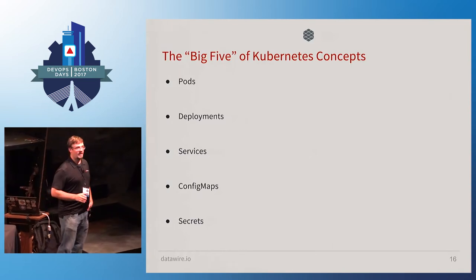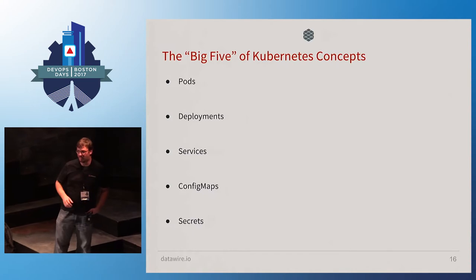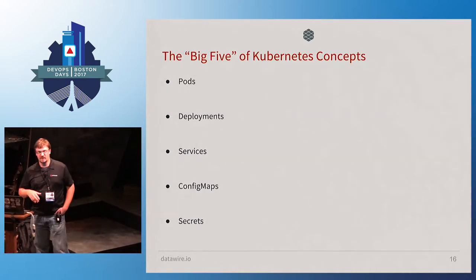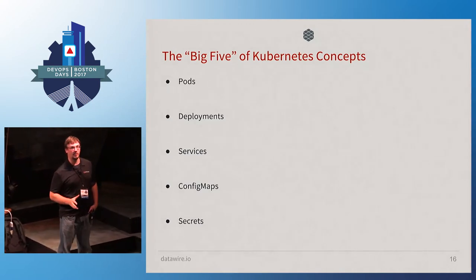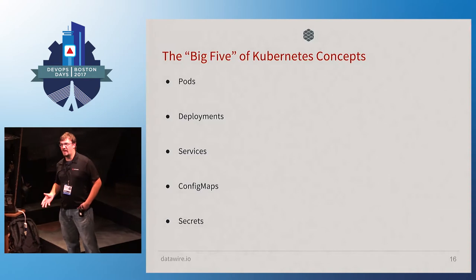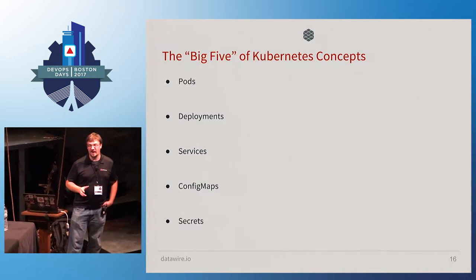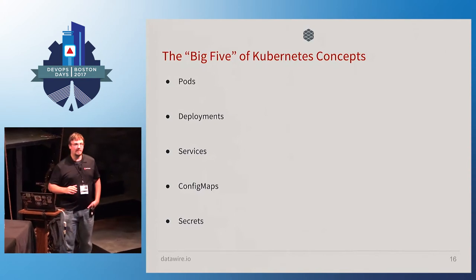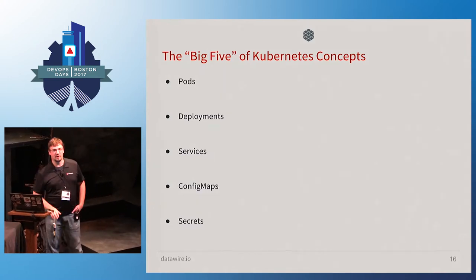What are the big five things you really need to know when using Kubernetes? The things that run your code, connect your code, and configure your code. In Kubernetes, that falls into: pods, deployments, services, config maps, and secrets. Config maps and secrets are interfaced similarly with some subtle differences.